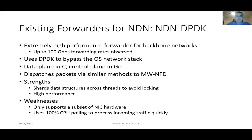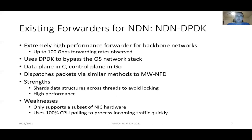Another forwarder is NDNDPDK, an extremely high-performance forwarder intended for backbone networks, able to achieve up to 100 gigabits per second — unprecedented at the time it was published around 2018. It uses DPDK, the Data Plane Development Kit, to bypass the OS network stack and achieve this insanely high performance. Its data plane is written in C, the control plane in Go, and it dispatches interest and data packets to different threads similarly to Multi-Worker NFD. Its strengths include sharding data structures across threads to avoid locking, but it only supports a subset of NIC hardware and also uses 100% CPU polling.